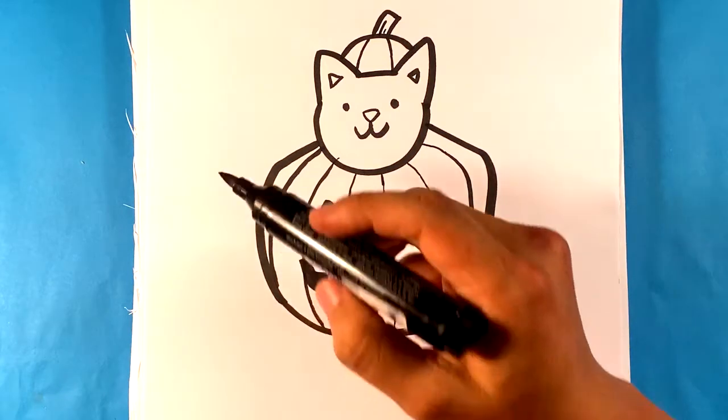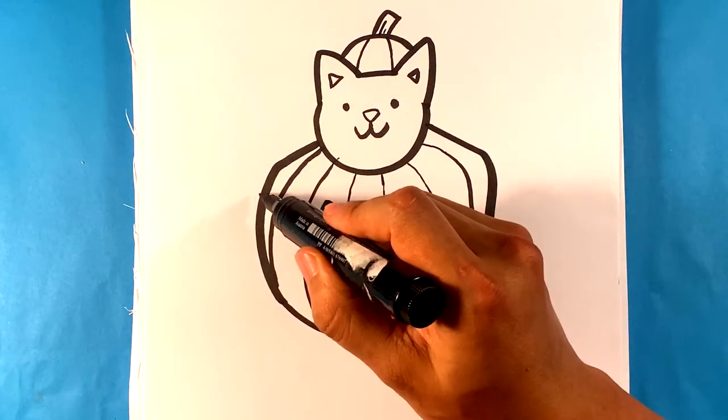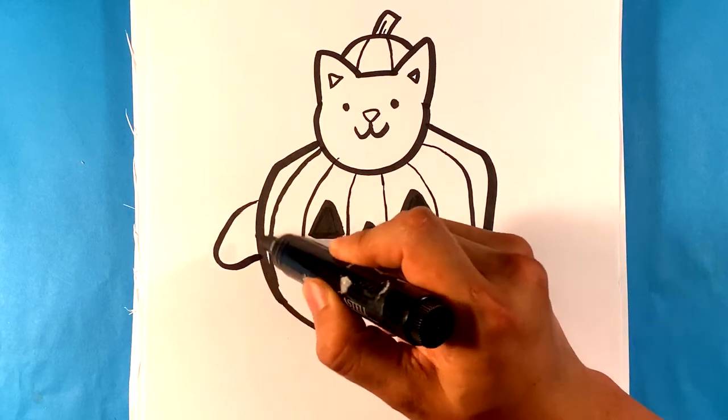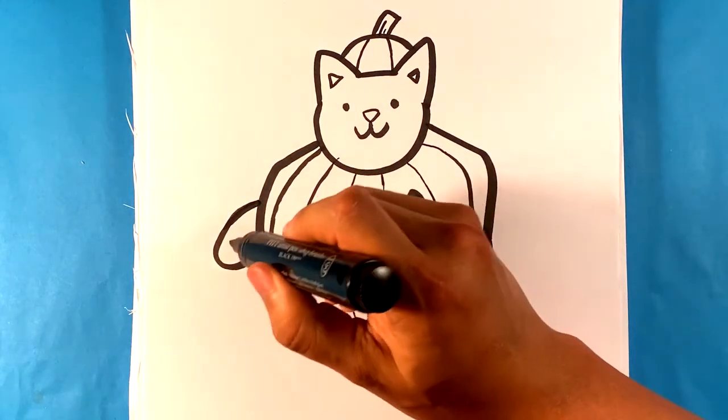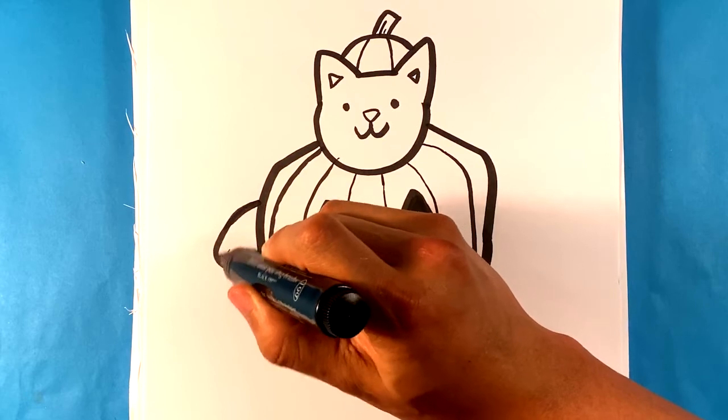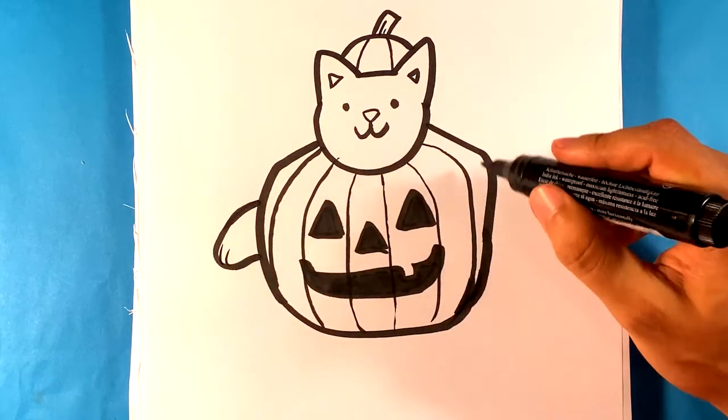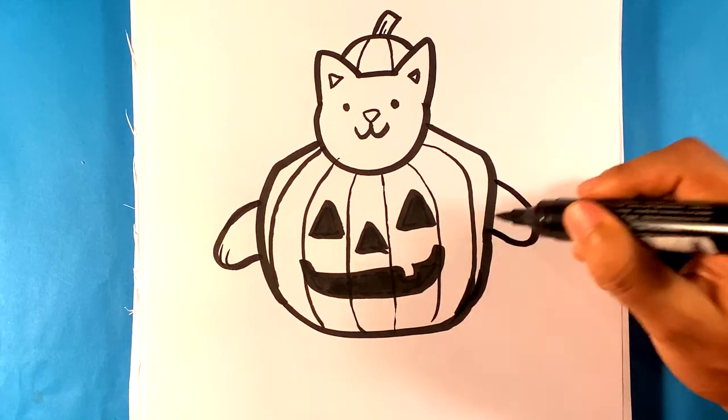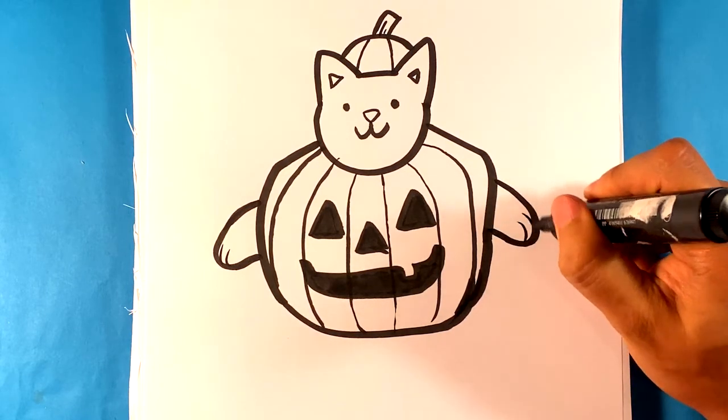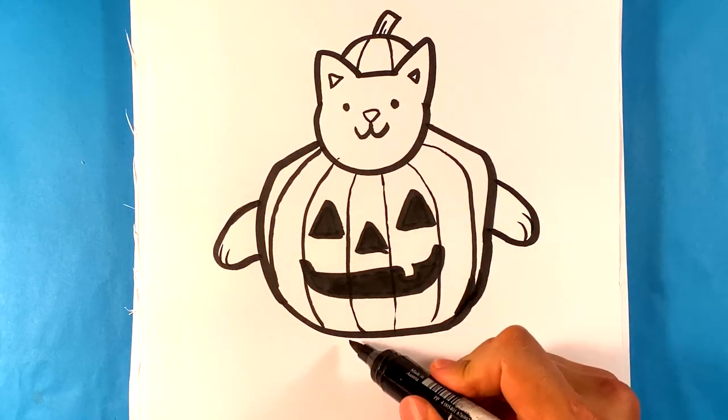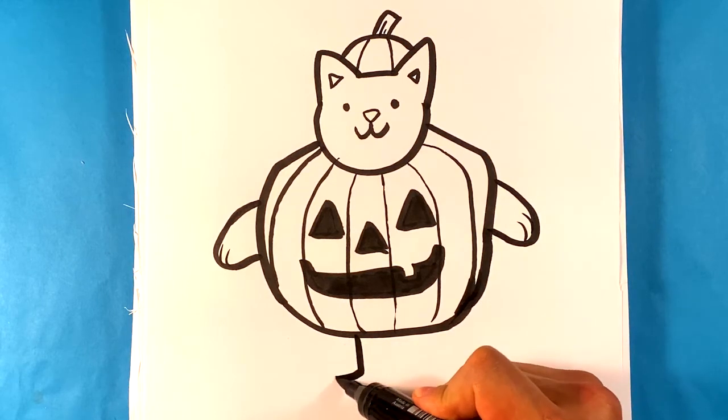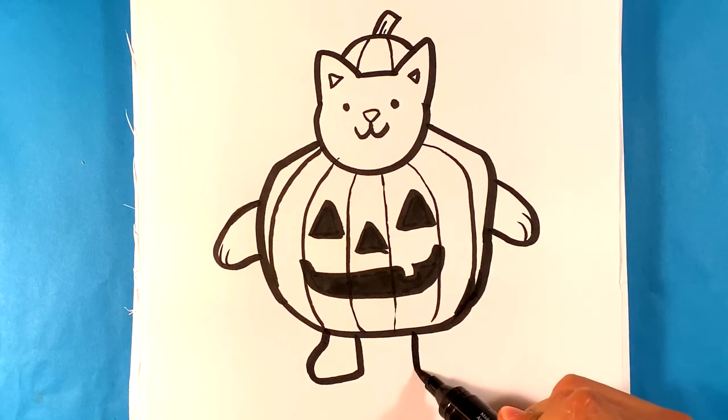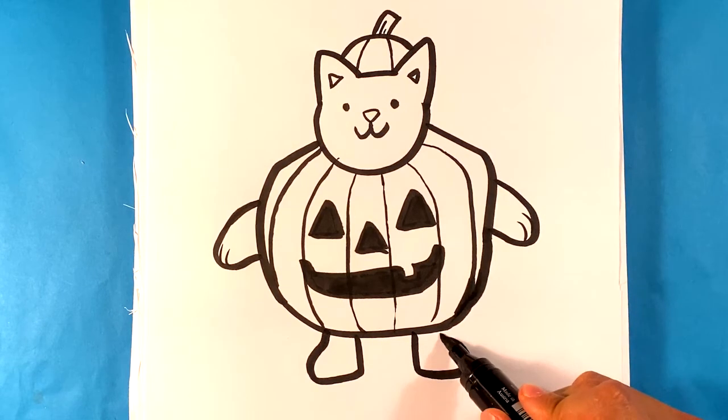All right. Then I'm going to draw a little cat hand. Over here. Another one. It's just kind of like a droopy shape. Here. Line down here for the foot. Line down here for the foot.